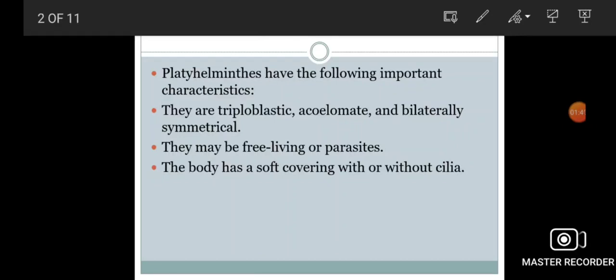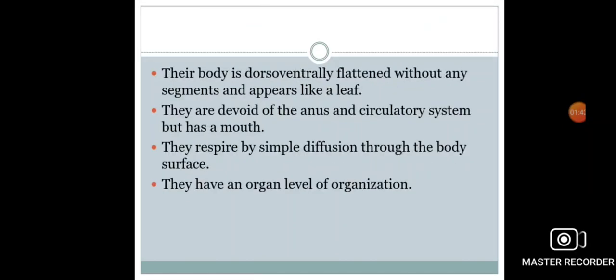The body of platyhelminthes is dorsoventrally flattened without any segments and appears like a leaf. They are devoid of anus and circulatory system, but have a mouth. They respire by simple diffusion through the body surface. They have an organ level of organization.